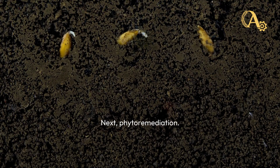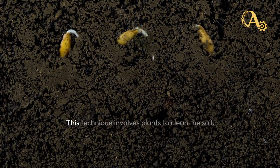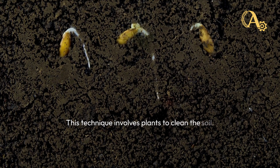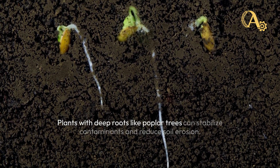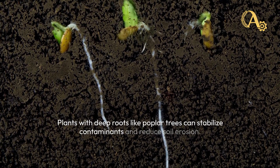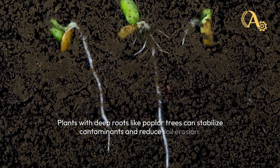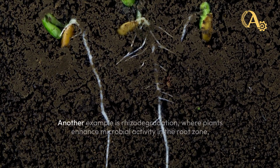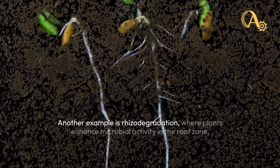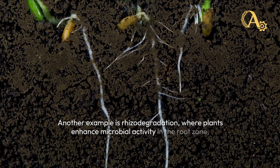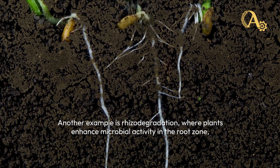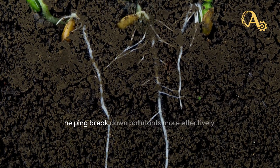Next, phytoremediation. This technique involves plants to clean the soil. Plants with deep roots like poplar trees can stabilize contaminants and reduce soil erosion. Another example is rhizodegradation, where plants enhance microbial activity in the root zone, helping break down pollutants more effectively.